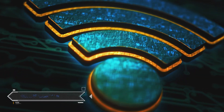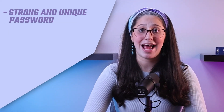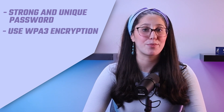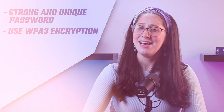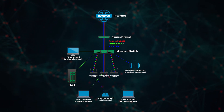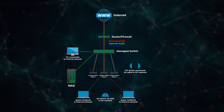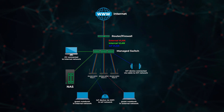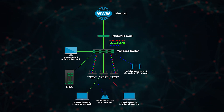You're also going to need to secure your Wi-Fi network. Your home network is the gateway for your smart devices. Protect it with a strong, unique password and use WPA3 encryption. Consider isolating your IoT devices on a separate network from your critical systems to minimize the potential damage from an attack.